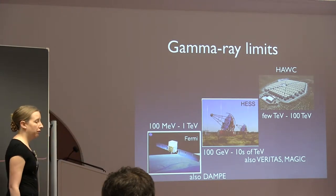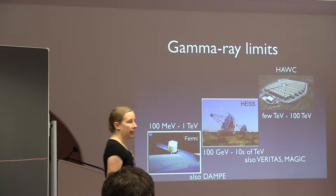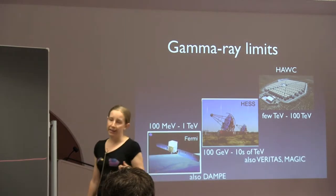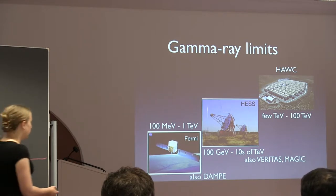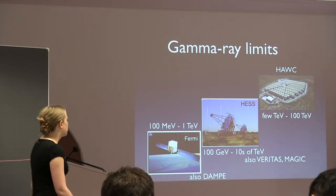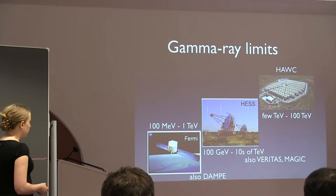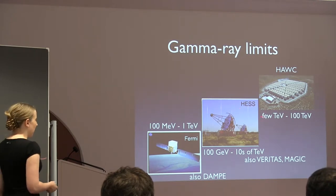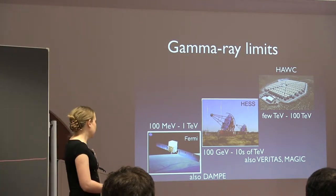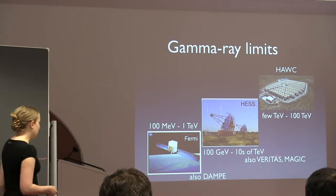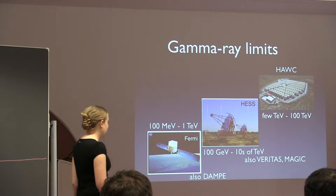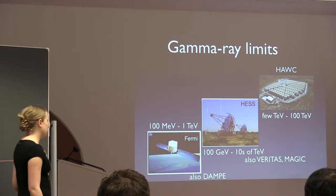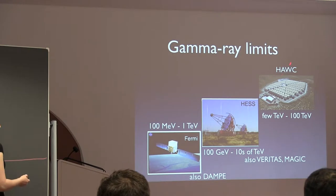Once you go up to higher energy, sufficiently high-energy gamma rays hitting our atmosphere produce a shower of Cherenkov light. So the atmosphere may screen out the original gamma ray, but you can look for the Cherenkov shower. There are essentially two main technologies: the Air Cherenkov telescopes — there's HESS, Veritas, and MAGIC — which can probe gamma rays from about 100 GeV up to the tens of TeV scale.